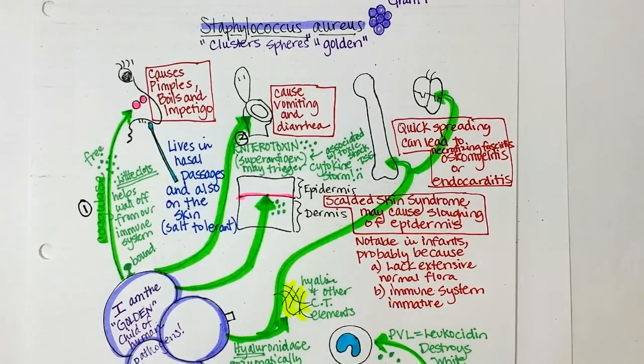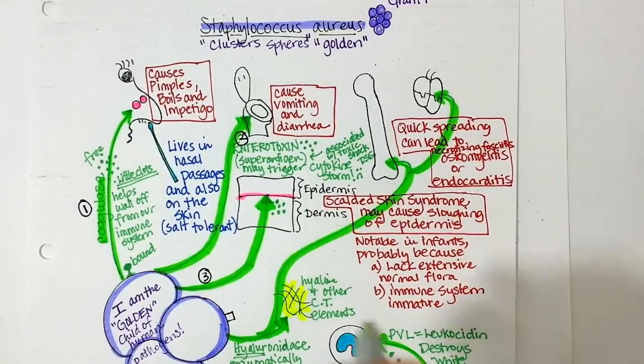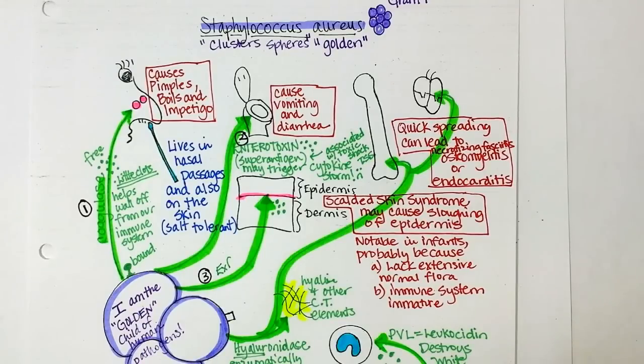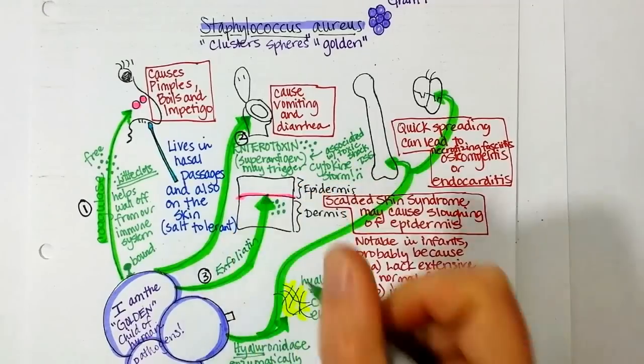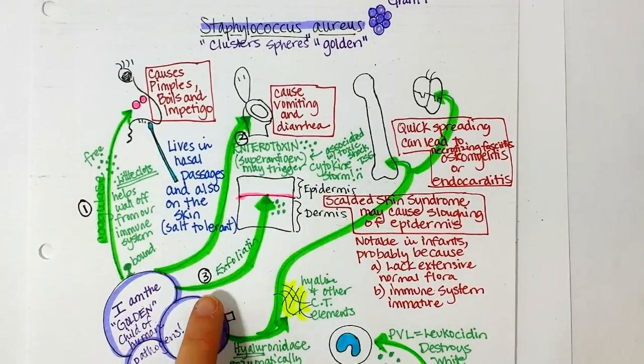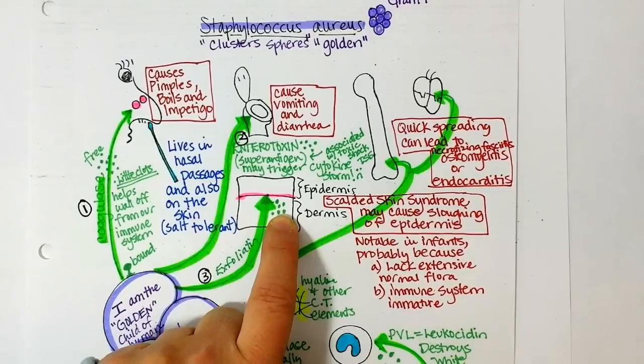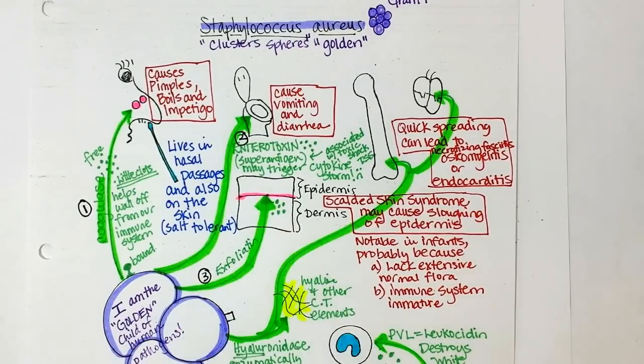Then we talked about exfoliatin. Which I see that I didn't even write that down for you. So let's write that on here. Exfoliatin. Did I not write it anywhere? Exfoliatin. Exfoliatin. And this toxin is able to separate the epidermis from the dermis with the damage it can cause. Leading to scalded skin syndrome. Most common in immunocompromised babies.